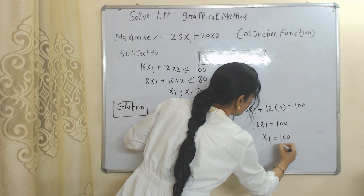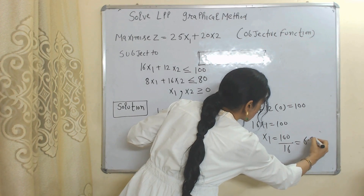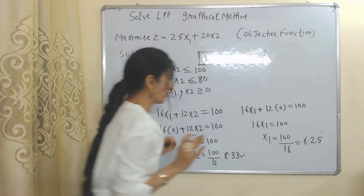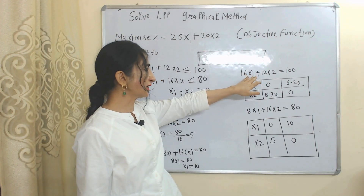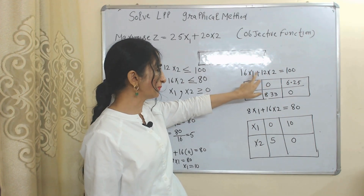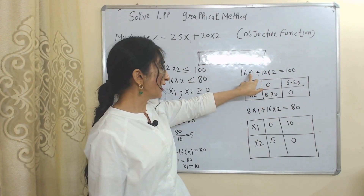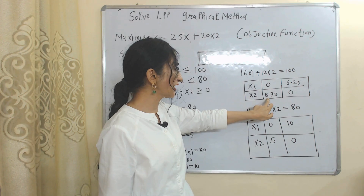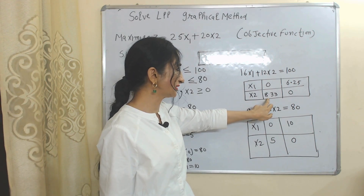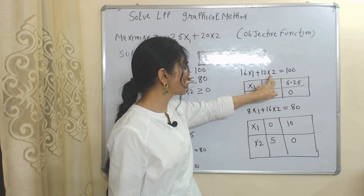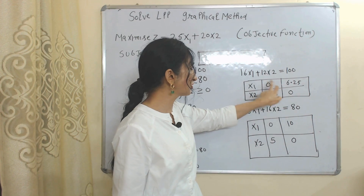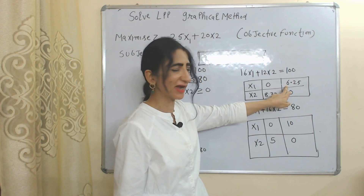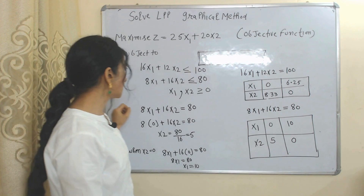To find the value of x1, we put x2 = 0, and the value of x1 becomes 6.25. So when x1 = 0, x2 = 8.33, and when x2 = 0, x1 = 6.25.